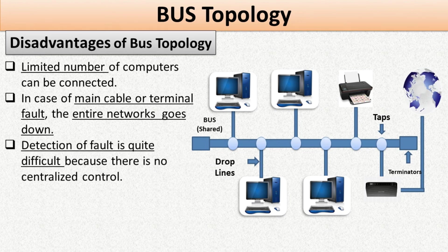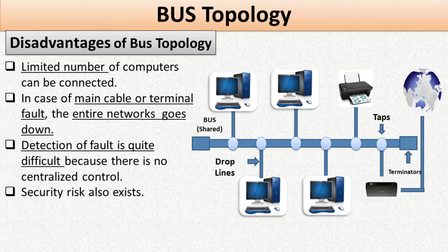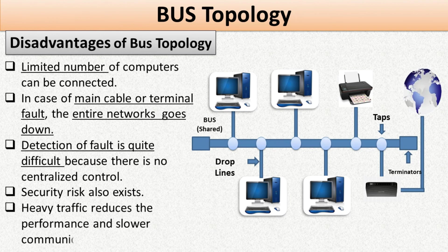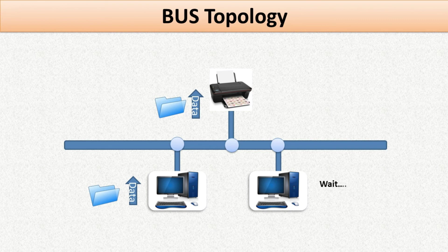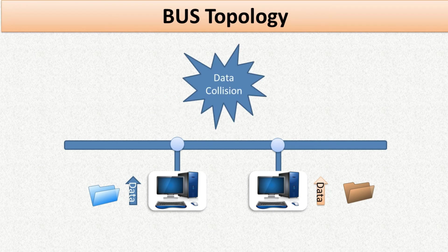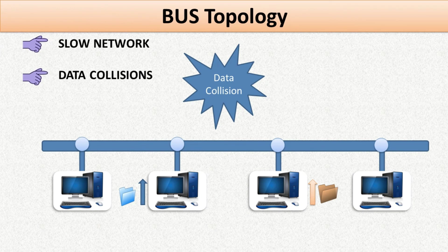Detection of faults is quite difficult because there is no centralized control. A security risk also exists, because all computers can hear and see what other computers are saying on the shared media. Heavy traffic reduces performance and slows communication — in bus topology only one computer can transmit data at a time, so while one computer is sending a file, others must wait. If multiple computers start sending data simultaneously, it will collide and corrupt the data, requiring retransmission. Therefore, the more computers connected to the same central cable, the slower the network becomes and the higher the chance of data collision.